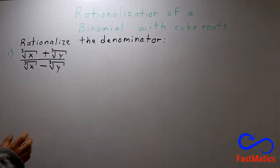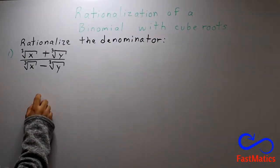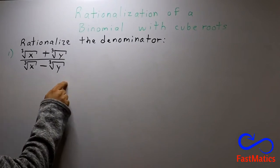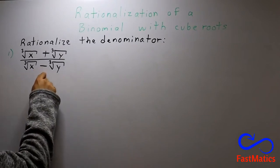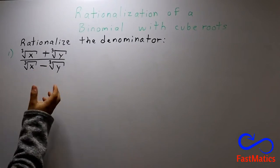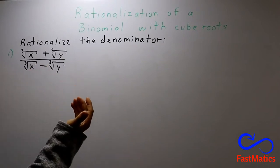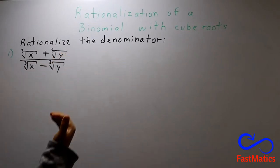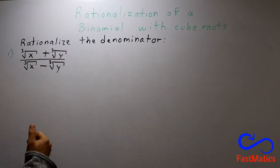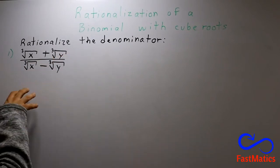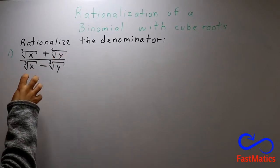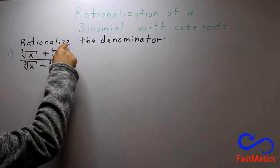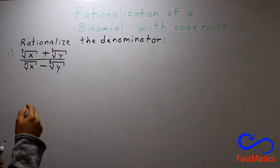First of all, we have to identify that we have two terms separated by a negative sign or a positive sign in the numerator or the denominator. But in this case, we have to rationalize the denominator.